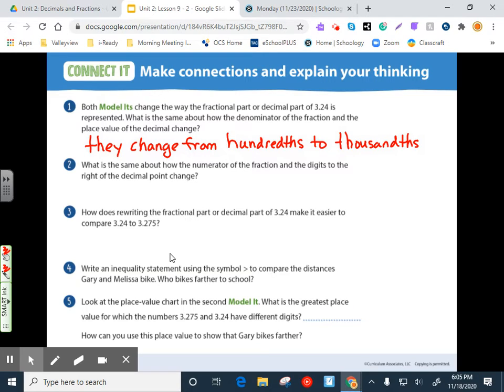Alright. What's the same about how the denominator of the fraction and the place value of the decimal change? They change from hundredths to thousandths. So basically what they mean by that is this three and twenty four hundredths. They added a zero on there to make it three and twenty four thousandths, the same way they did with the decimals when we were working on that before.